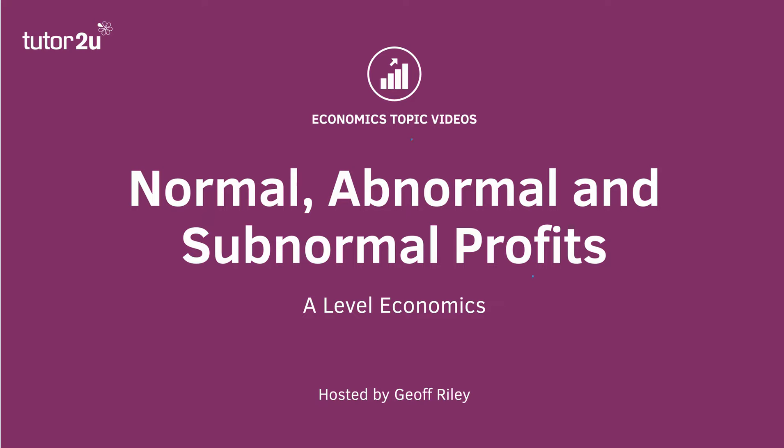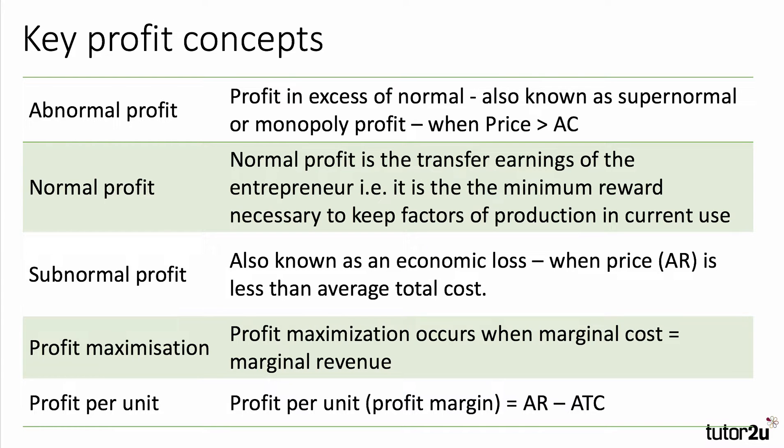A quick run through of the key profit concepts. Abnormal profit is also known as supernormal profit or monopoly profit, and it's basically when the business makes a profit in excess of normal returns. You can show that on a diagram where the price per unit the firm is charging is higher than the cost per unit.